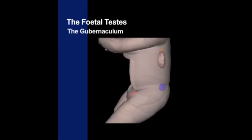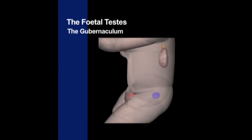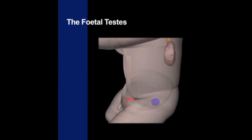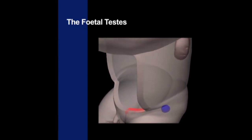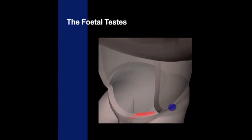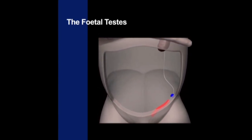The fetal testes descend from the lumbar region of the posterior abdominal wall between weeks 9 and 12 of gestation. This descent is guided by the gubernaculum, a fibrous cord that projects to the final destination of the testes, the scrotum.